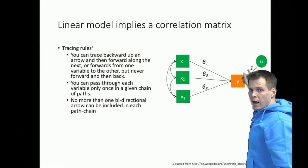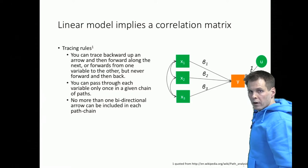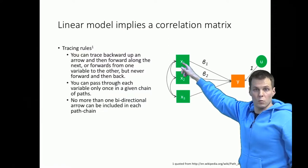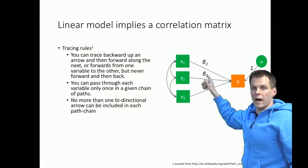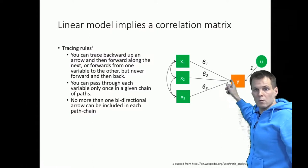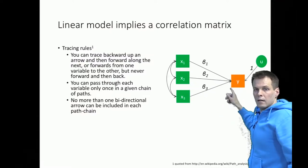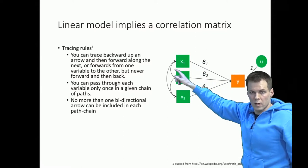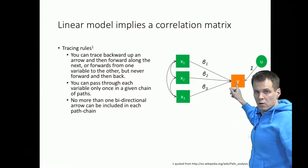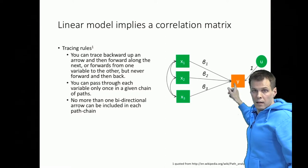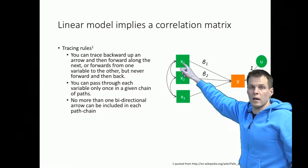We can go to the error term and come back — that is the variance of the error term times one times one. Then we have y to x1: the variance of x1 is one because we're working with standardized data, and we come back, so we get beta one squared. The same applies for x2 and x3. Then there is a path from y to x1, then along one correlation to x2, and back to y — giving beta one times the correlation times beta two.